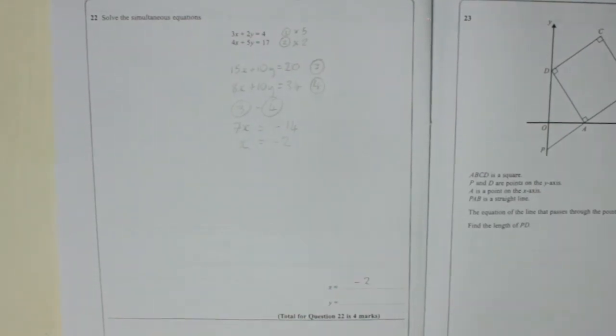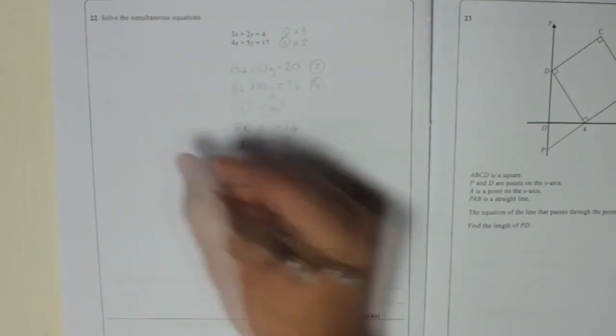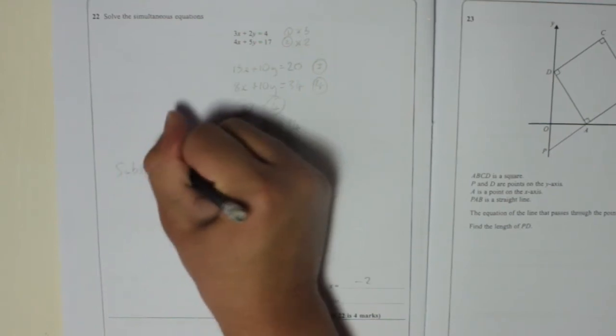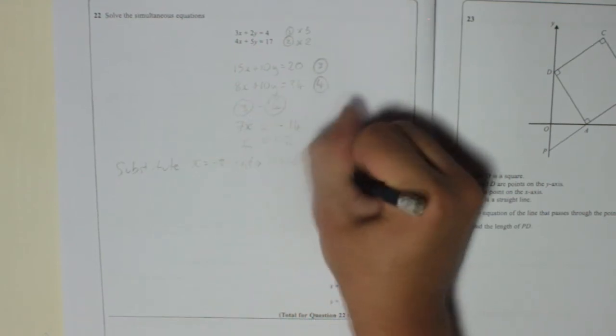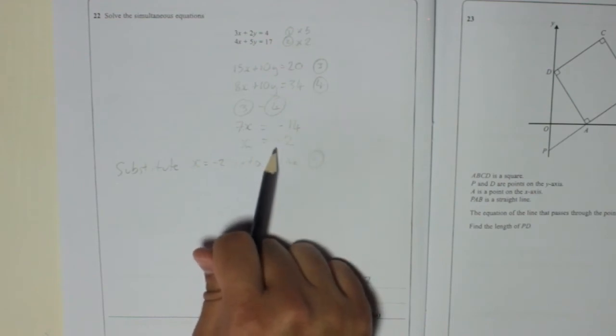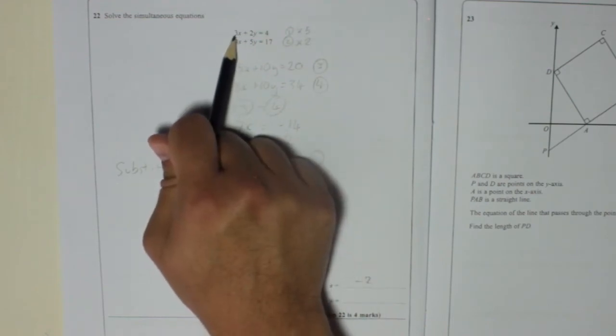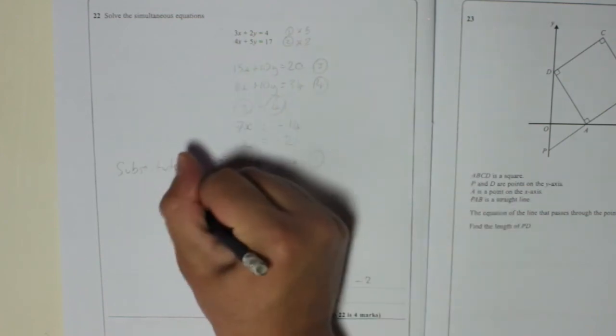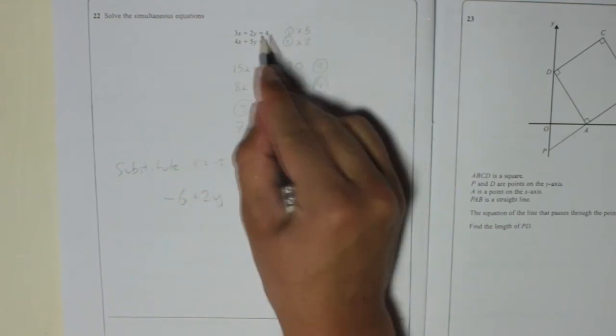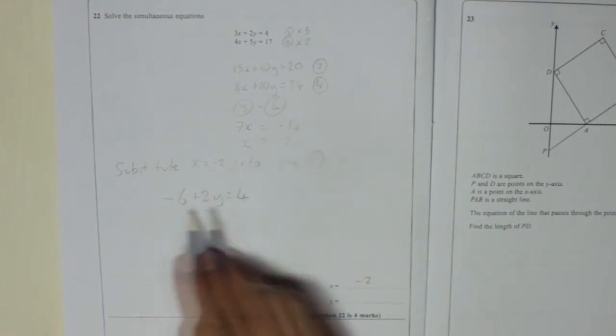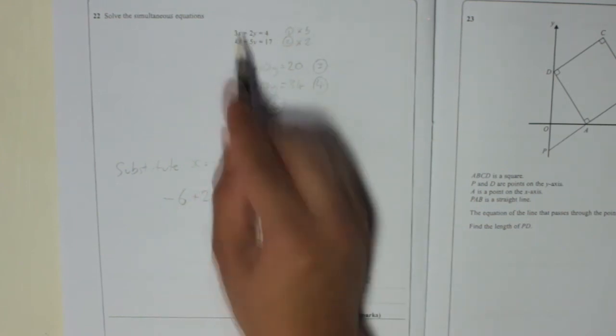To work out the y part, all we need to do now is substitute our x into one of those. And I think I'm going to substitute into the first one, because the y's got smaller numbers. It's got smaller numbers in general. So I'm going to say substitute x equals minus 2 into line 1. So if x is minus 2, 3x is 3 lots of minus 2, which is minus 6. And then you've got plus 2y equals 4. So that line there is exactly the same as that line, but instead of 3x, I've got minus 6.